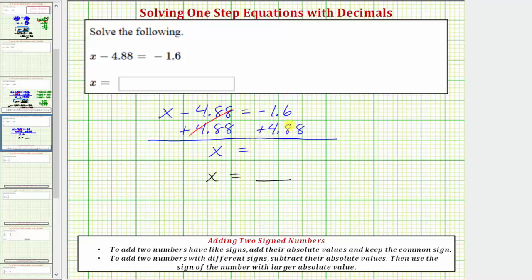On the right side, the sum will give us our solution. Because we're adding numbers with different signs, we'll have to subtract the absolute values and then use the sign of the number with the larger absolute value.